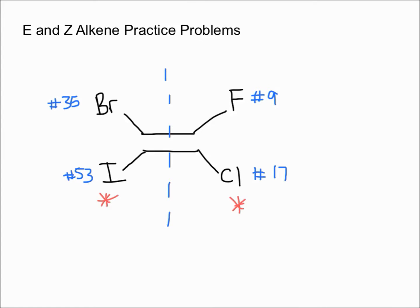Remember that E isomers have the highest priority groups on opposite sides of the bond, while Z has the highest priority groups on the same side of the bond. Iodine and chlorine are on the same side, so this is a Z isomer.